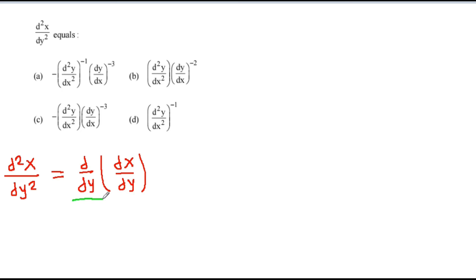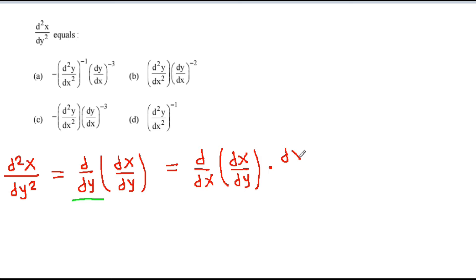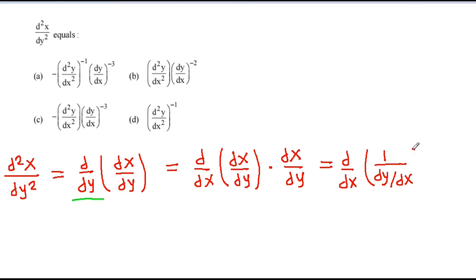We can write d by dy as d by dx of dx by dy, and we have dx by dy. Now it will be: d by dx of dx by dy can be written as 1 by dy by dx, and we have dx by dy.